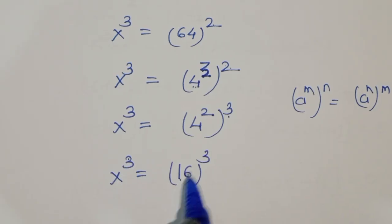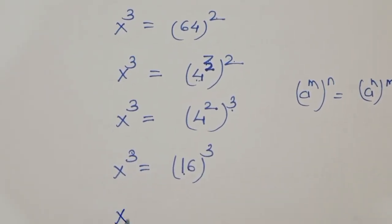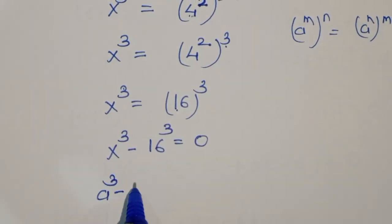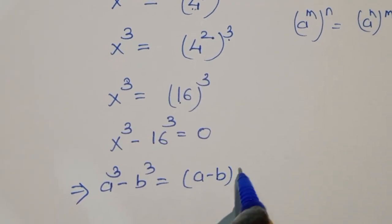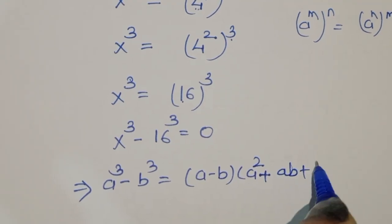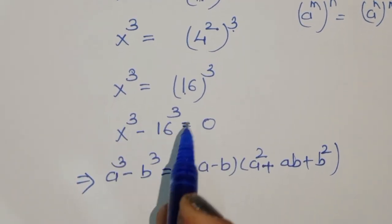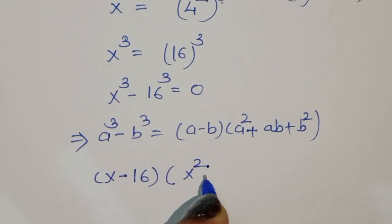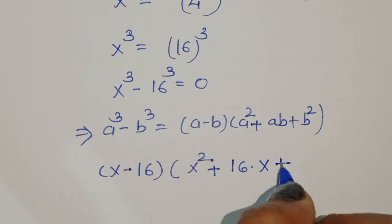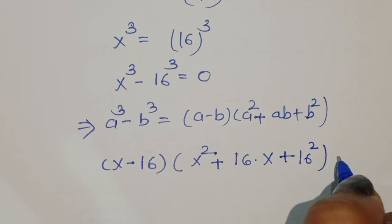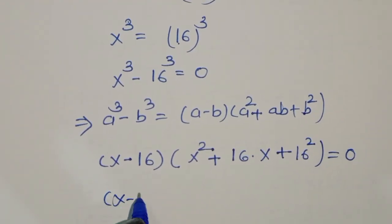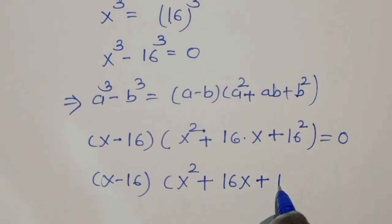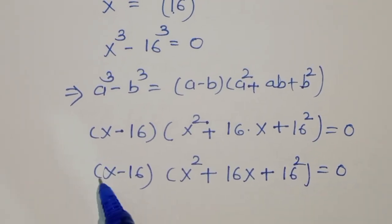Since both sides are in cube form, we write x cubed minus 16 cubed equals 0. Using the formula a cubed minus b cubed equals (a minus b)(a squared plus ab plus b squared), we expand: x cubed minus 16 cubed equals (x minus 16)(x squared plus 16x plus 16 squared) equals 0.